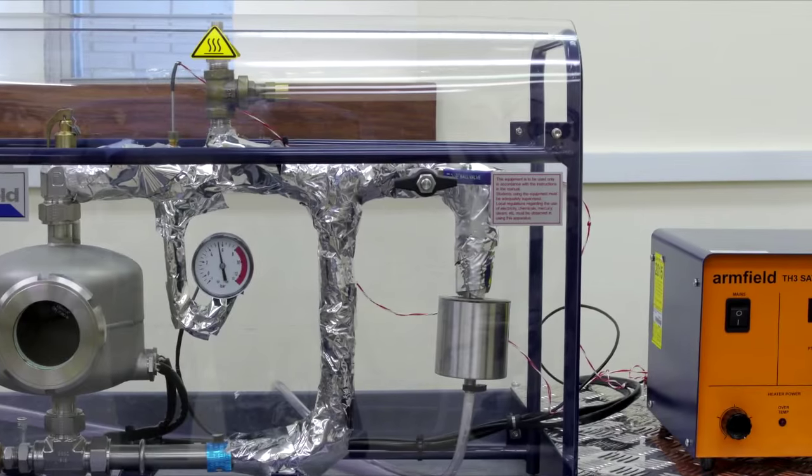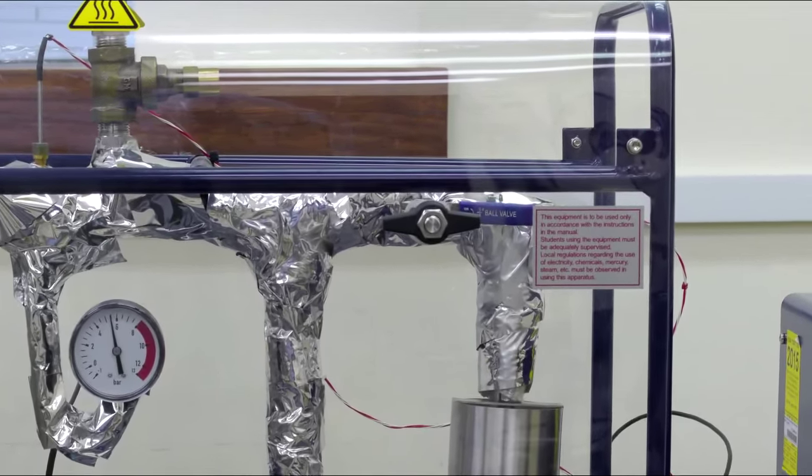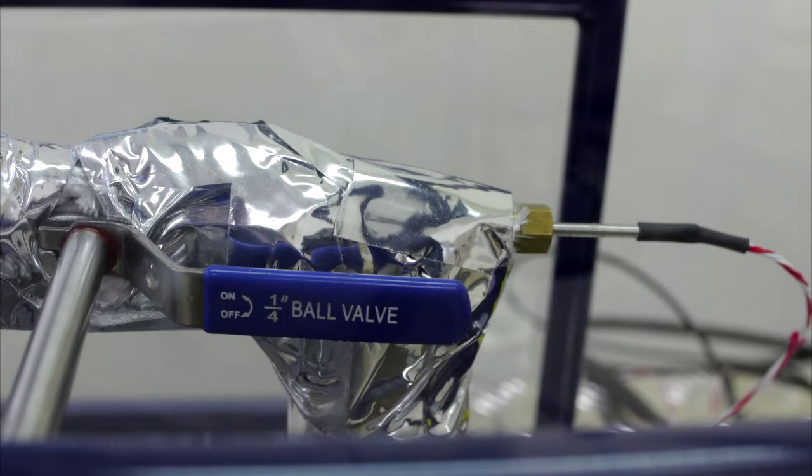Looking more closely, we see here the calorimeter valve in the open position. This valve allows steam to exit the boiler and expand to atmospheric pressure. Temperature sensor 2 is next to the valve handle. This sensor records the temperature of the steam after it has passed through the throttling valve.